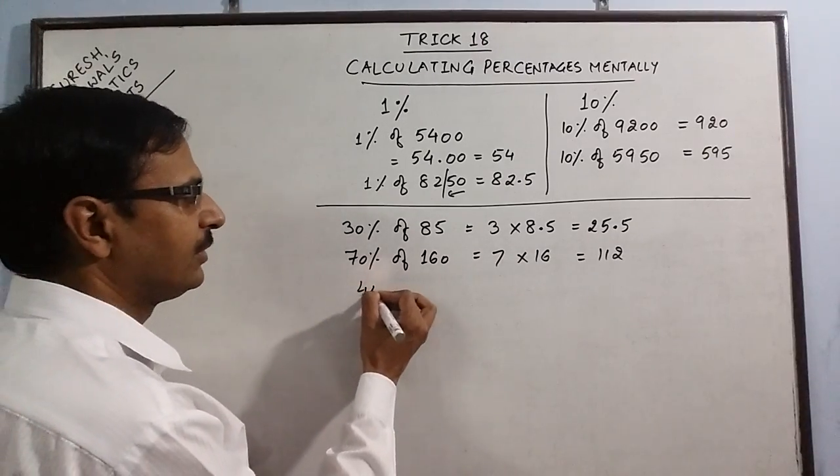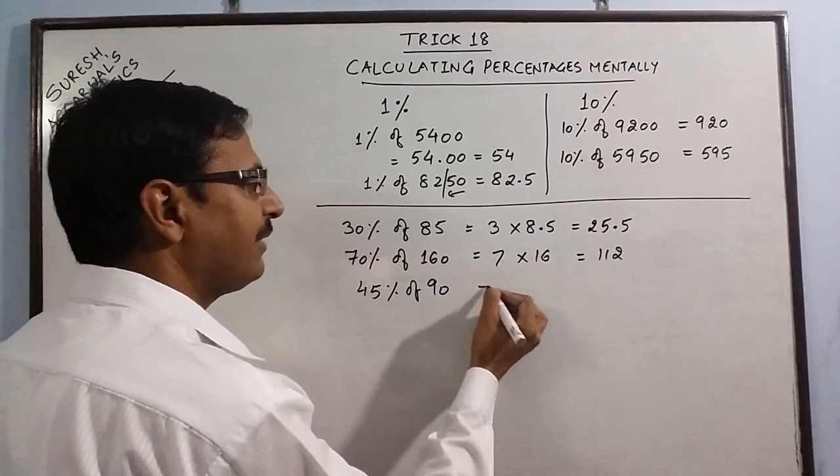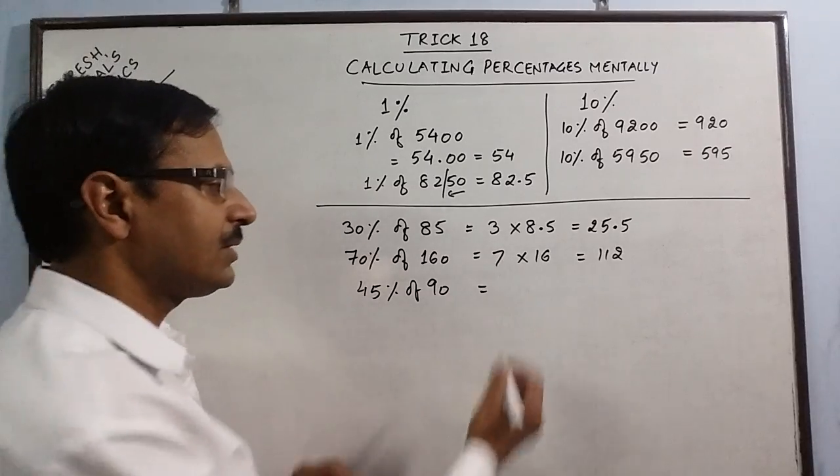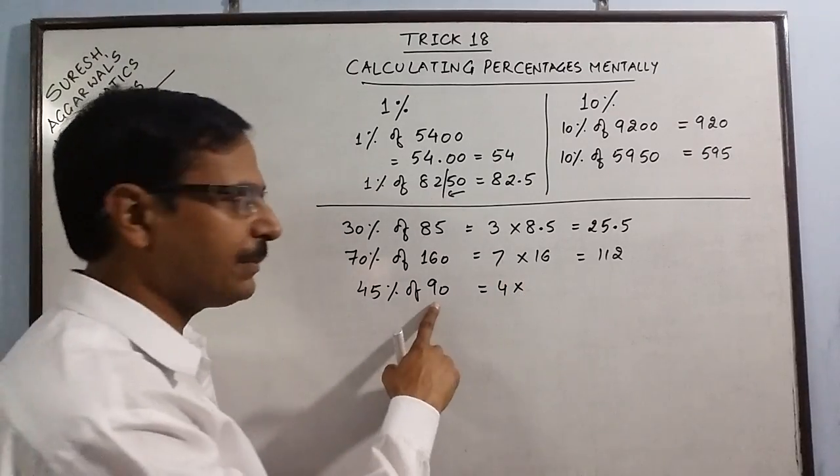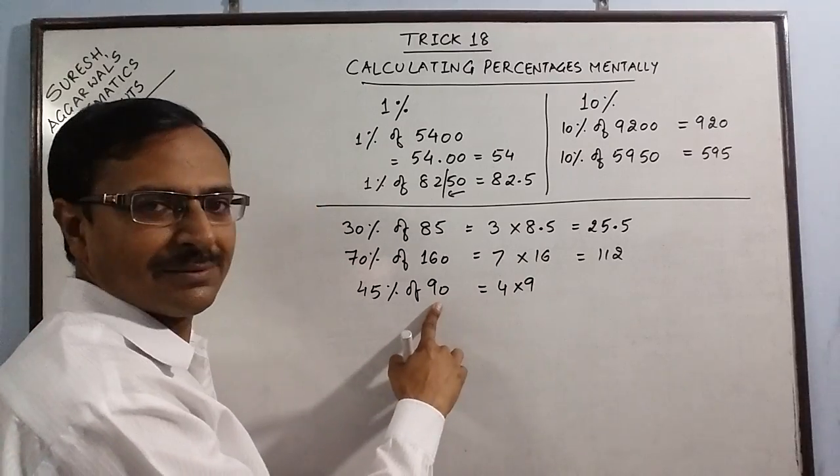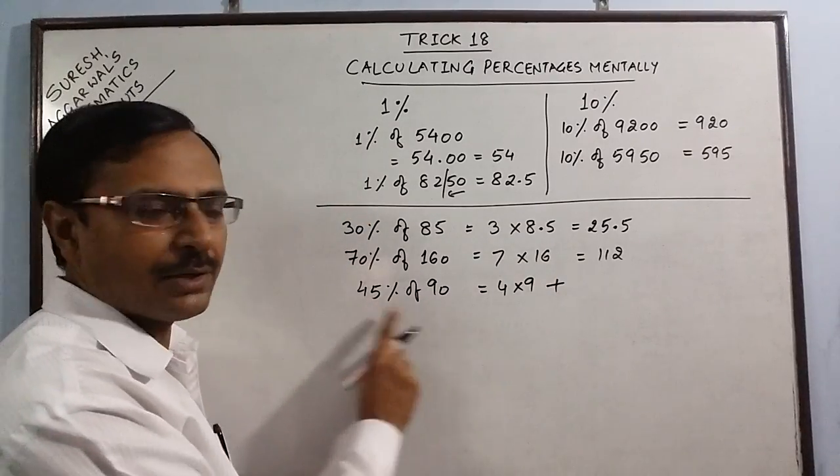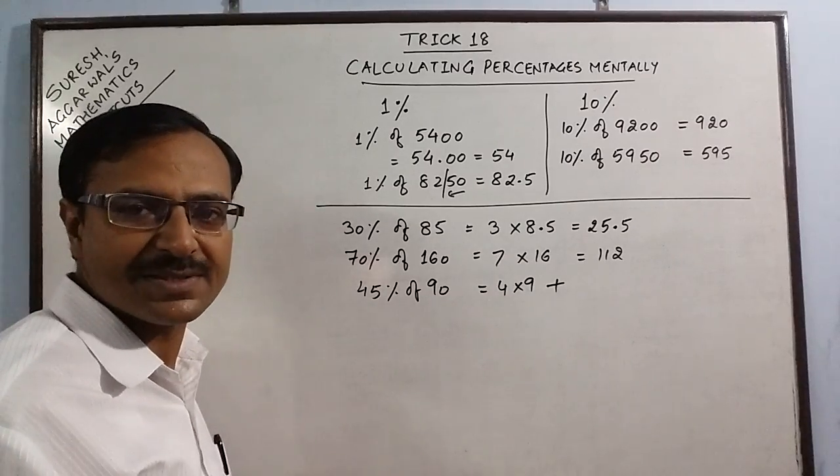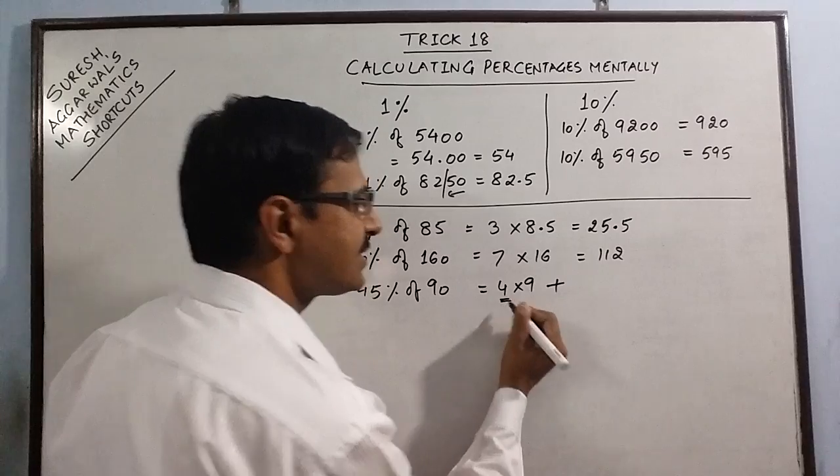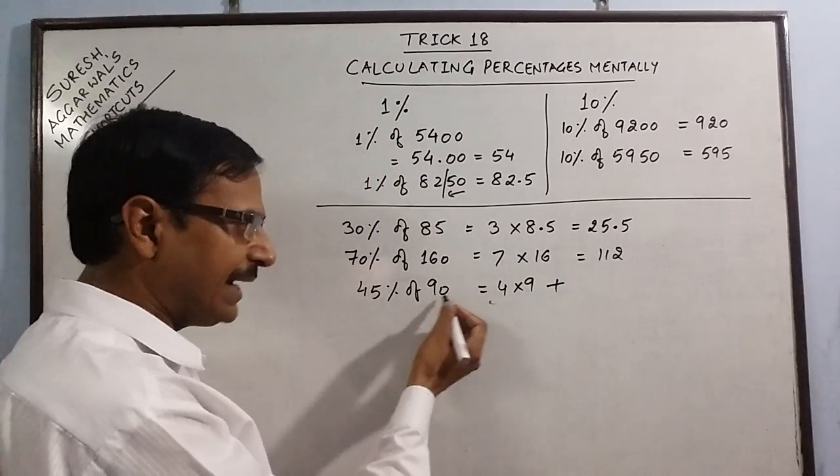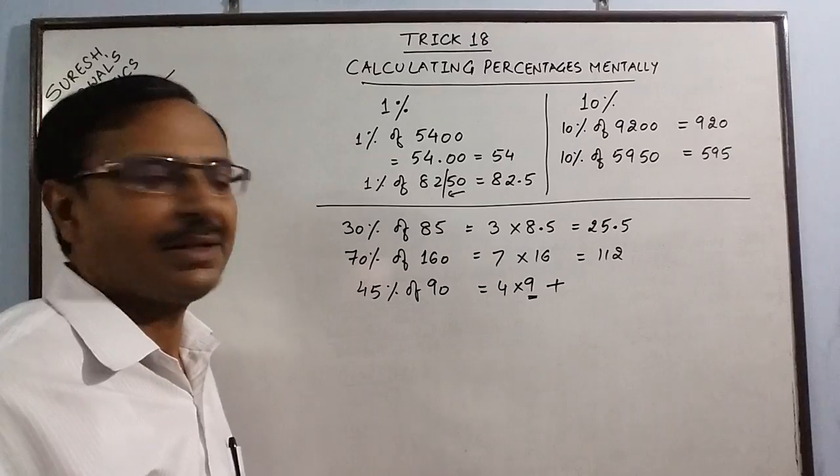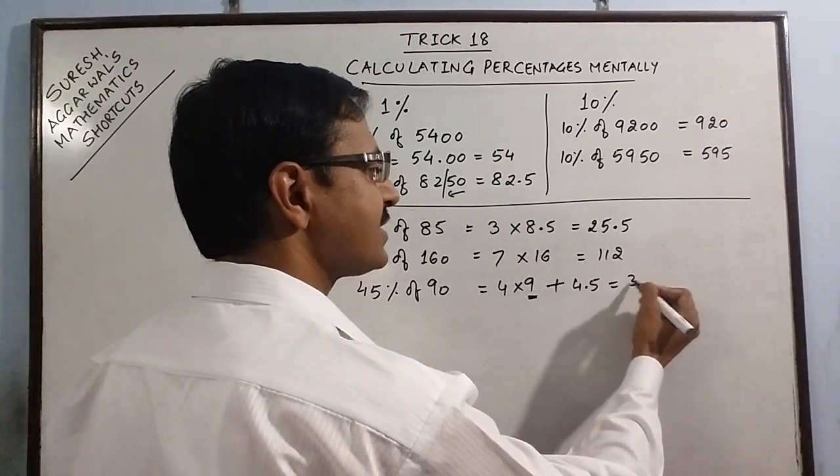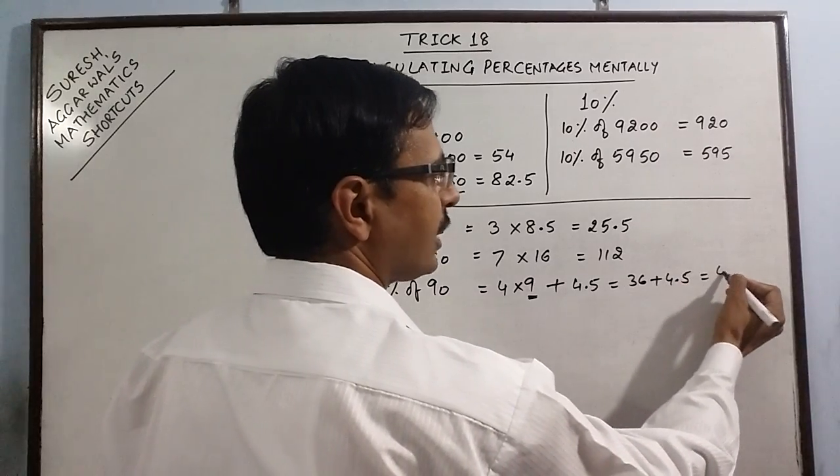Another example. Say 45% of 90. Now I will not calculate 45%, I will calculate 40% first. 40%, 4 into 10%, 10% is 9. And I have calculated 40% now. But I want 45%, so remaining 5% is there. If 10% of 90 is 9, then 5% is its half, 4.5. So this gives us 36 plus 4.5, that is 40.5.